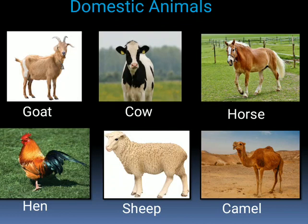Goat gives us milk and meat. Cow gives us milk. Horse carries our load and helps us to travel. Hen gives us eggs. Sheep gives us wool. A camel is called the ship of the desert as it can easily move in the desert and live without food and water for several days.